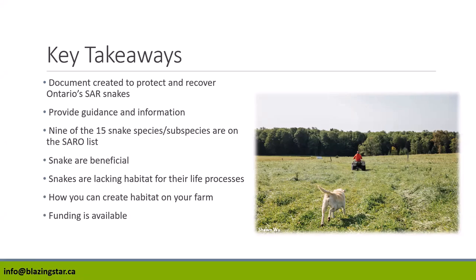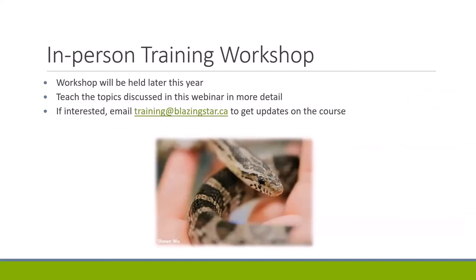These practices are especially important because most of our species at risk snakes are disappearing from the landscape. In addition, these snakes provide many benefits to your farm. If you want to create or improve snake habitat on your farm, there are great funding opportunities, including the OSCIA Species at Risk Farm Incentive Program — a great one to look into. There will also be an in-person training workshop held to teach these best management practices at a future date; if you are interested, email training@blazingstar.ca for updates.